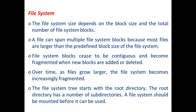File system blocks cease to be contiguous and become fragmented when new blocks are added or deleted. Over time, as files grow larger, the file system becomes increasingly fragmented. Most operating systems provide a defragmentation tool to remove these fragments. The file system tree starts with the root directory, which has sub-directories. A file system must be mounted before it can be used.